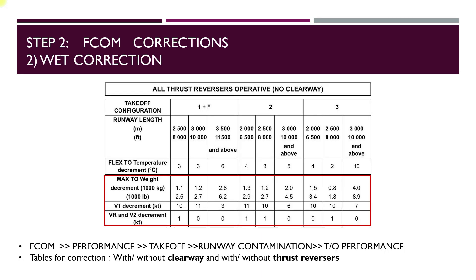For a wet runway condition, if we don't have a separate wet chart, the FCOM correction needs to be applied. For that, go to Performance, Takeoff, Runway Contamination and Takeoff Performance, and you will see a table for different conditions involving clearways and thrust reversers. The specific table shown here applies when all thrust reversers are operative but there is no clearway for the runway. You can see the weight decrement and speed decrement mentioned for different flap configurations.